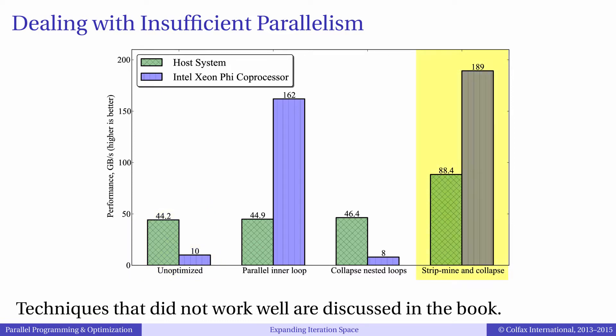The last set of bars is the code with strip mining and loop collapse. As you can see, the performance impact on the host processor was a factor of two, and on the coprocessor, which was miserable with the original code, the performance improved almost by a factor of 20.